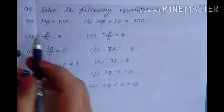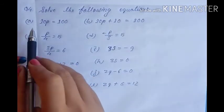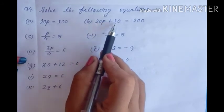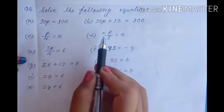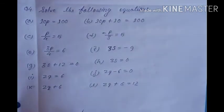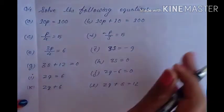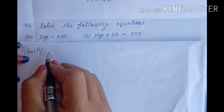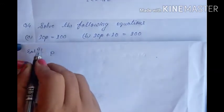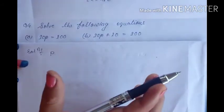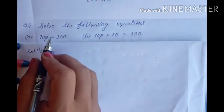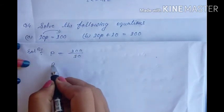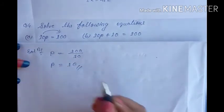Now question number 4: solve the following equations. For A: 10p equals 100. P is the variable; we have to find its value. Transpose 10 to the right hand side — multiply becomes divide. So p equals 100 divided by 10, which equals 10.